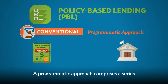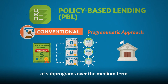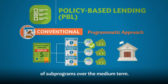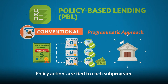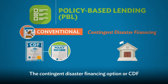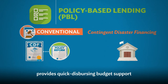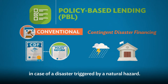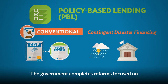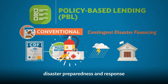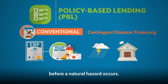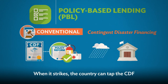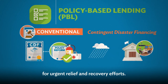A programmatic approach comprises a series of sub-programs over the medium term, with policy actions tied to each sub-program. The Contingent Disaster Financing Option, or CDF, provides quick disbursing budget support in case of a disaster triggered by a natural hazard. The government completes reforms focused on disaster preparedness and response before a natural hazard occurs. When it strikes, the country can tap the CDF for urgent relief and recovery efforts.